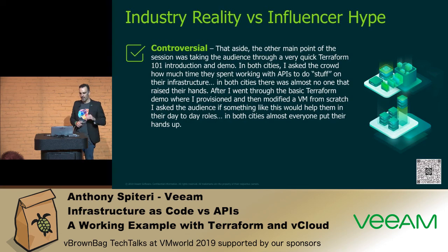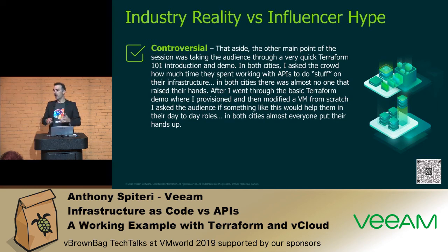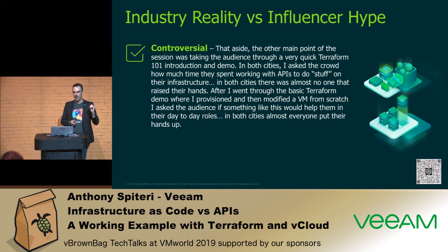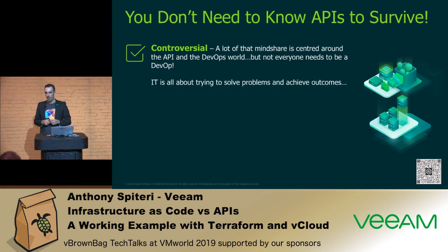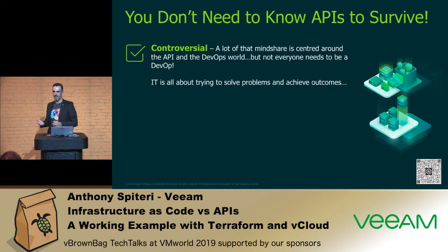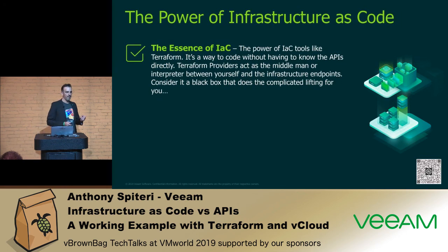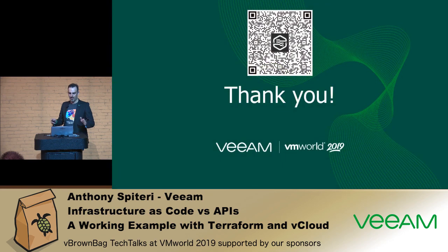Wrapping it up — a few controversial statements. In terms of reality versus influencer hype: if I asked any audience how much they're leveraging APIs versus a GUI, the numbers would be really low. DevOps culture has perpetuated a bit of a misnomer that we basically need APIs to survive. What I'm trying to say is that as an infrastructure guy, you don't need to rely on APIs — there are tools out there to make your job easier. Terraform and infrastructure as code is that. Instead of understanding the API, go to the tool that does all the work for you and makes your life easier. That is effectively the essence of infrastructure as code — it's the middleman that makes your life easier. Thank you very much.